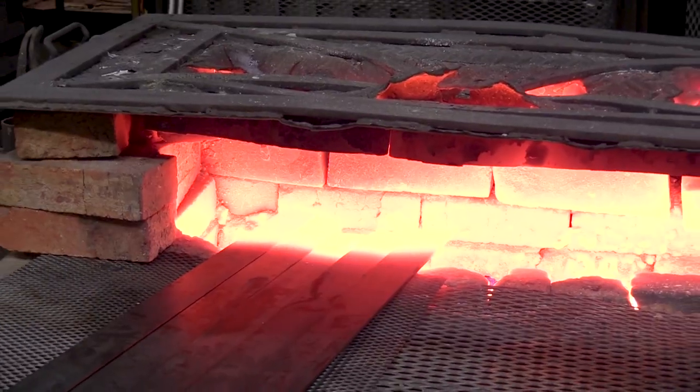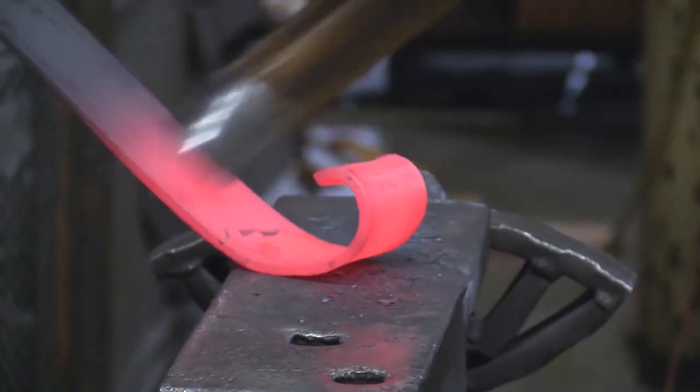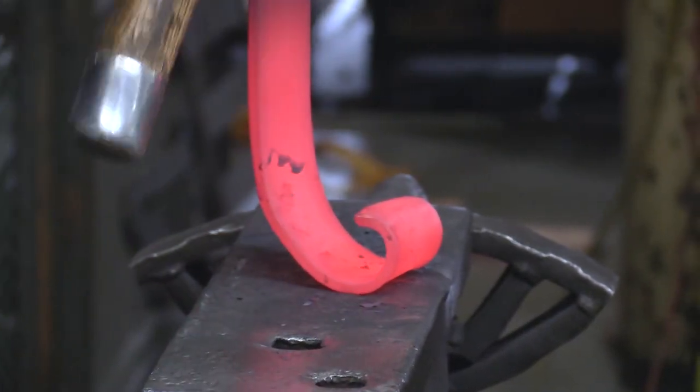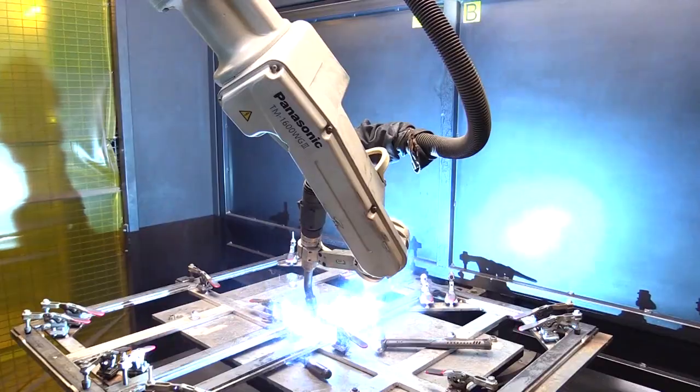The pieces are then hand-forged with a hammer and anvil, a process unchanged since blacksmiths in the Middle Ages.